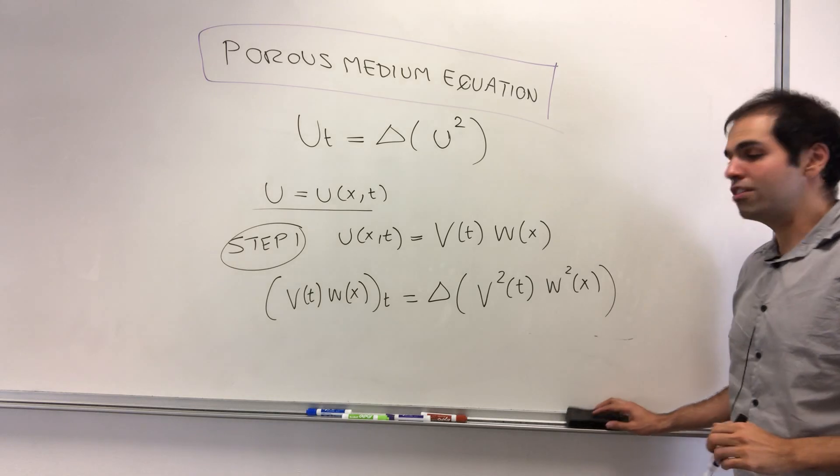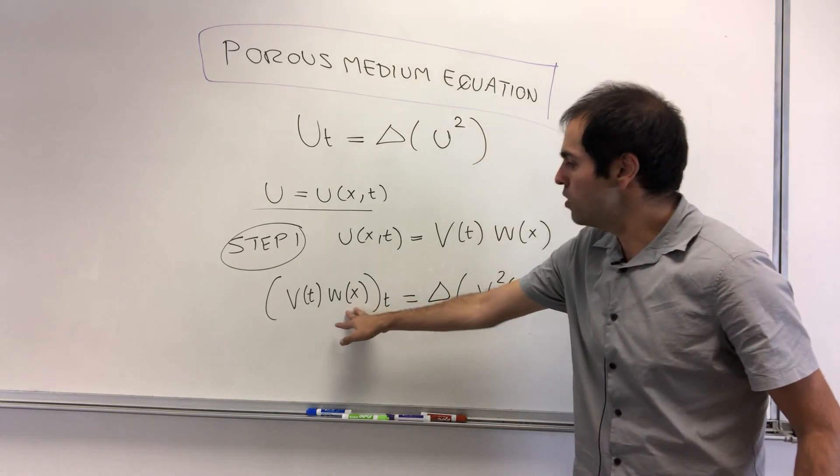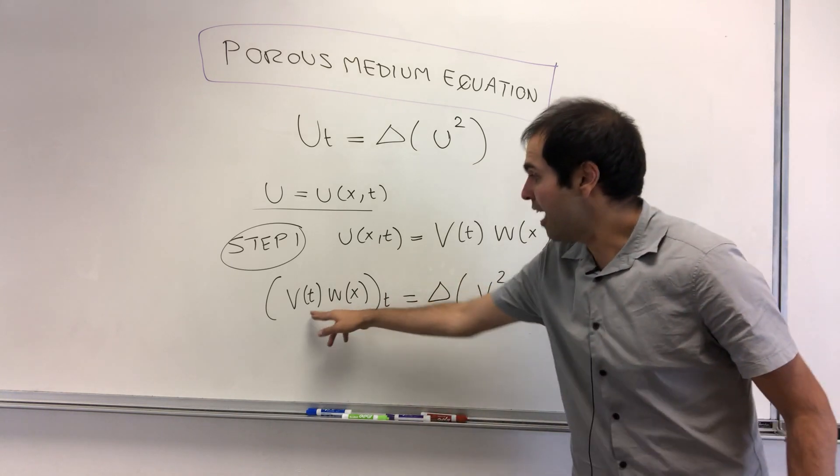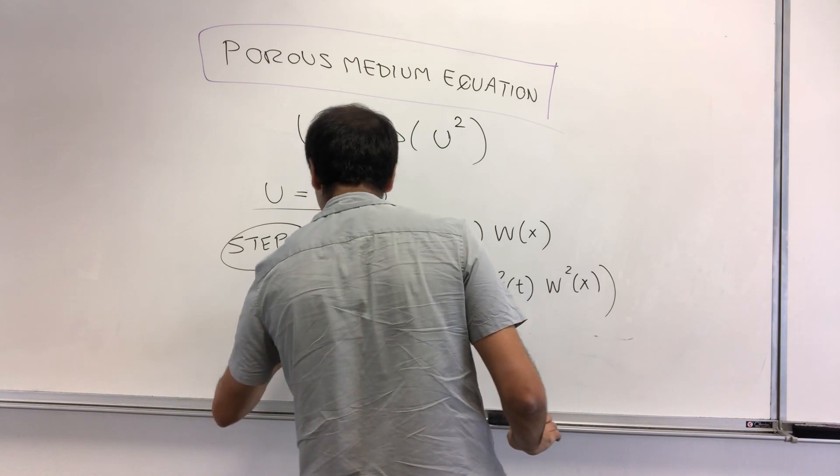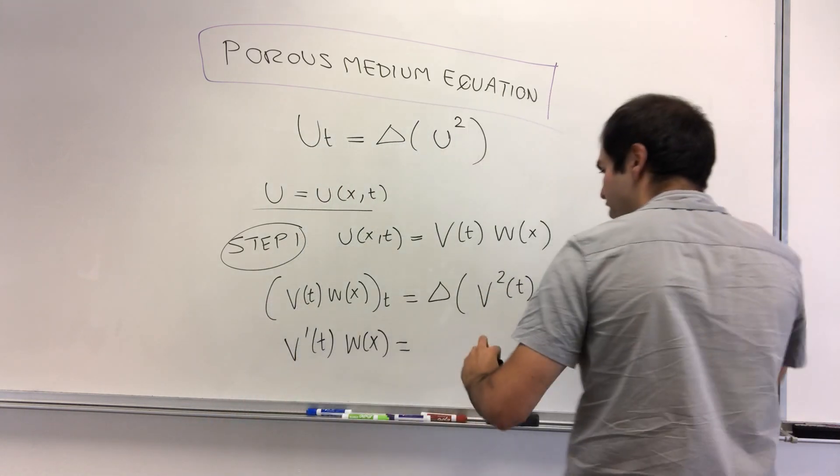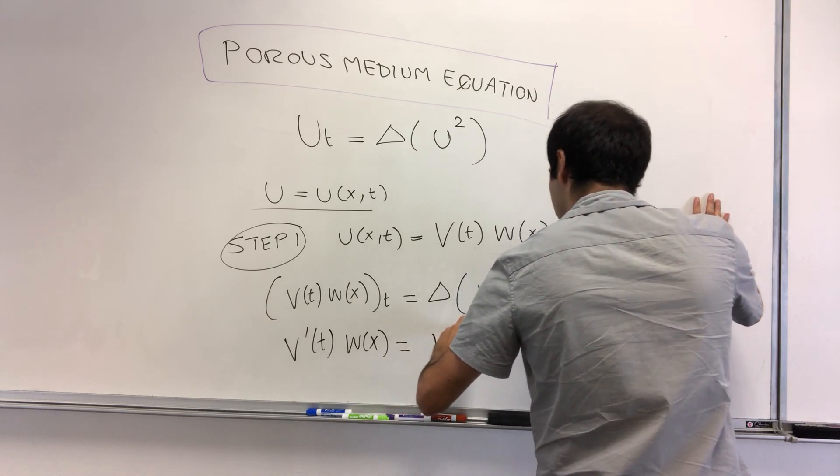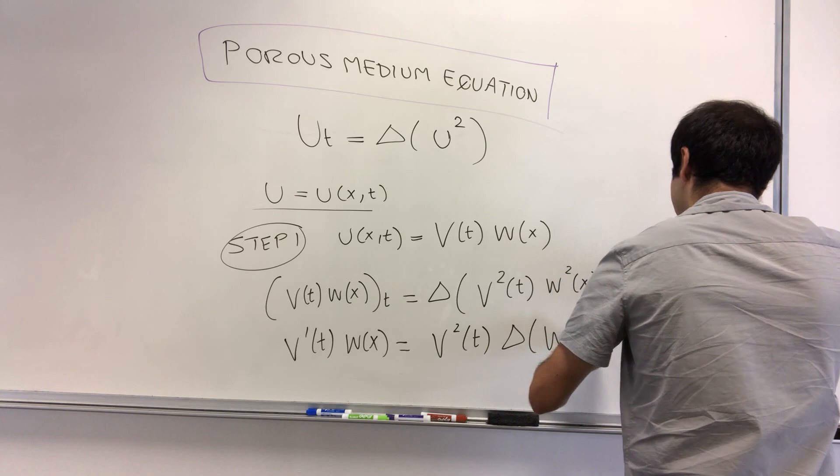And the nice thing is, w doesn't depend on t, so it comes out, and then v becomes v prime. So v prime of t times w of x, and same thing with the Laplacian, equals v squared of t, Laplacian of w squared of x.